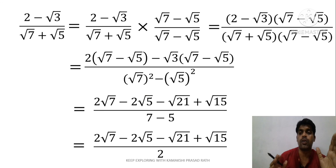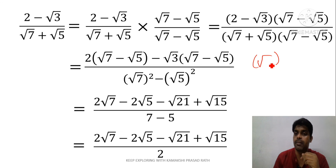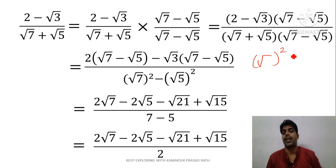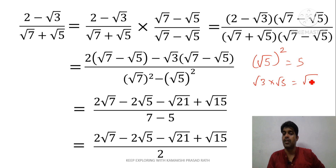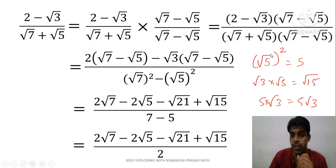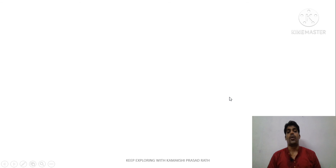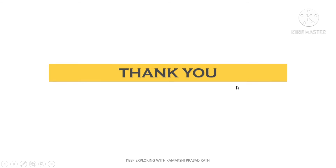So this is the way we solve how to rationalize denominators. Rationalization means removing the square roots from the denominator and making them whole numbers. Square roots are removed only when squared. Remember: root 3 times root 5 gives root 15, and 5 times root 3 gives 5 root 3. These are the basic concepts to remember while solving these types of questions. Hope you liked this video — please subscribe to the channel. Thank you and keep exploring.